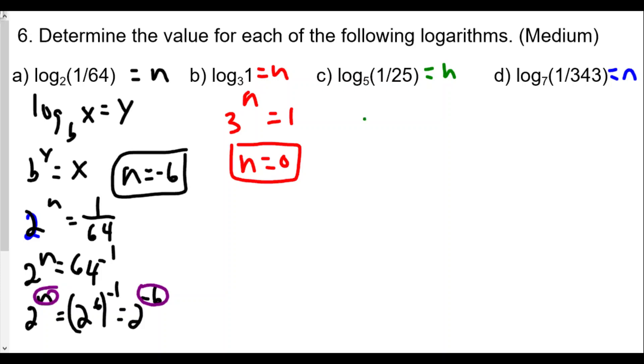For c, our base is 5, our exponent is n, and we have 1 over 25. We just talked about the idea that 1 over 25 can be expressed as 25 to the negative 1. And that's the same thing as, well, 25 is 5 squared, so we have 5 to the n equals 5 squared to the negative 1, or 5 to the n equals 5 to the negative 2. Therefore n is equal to negative 2, so our log value is negative 2 for c.